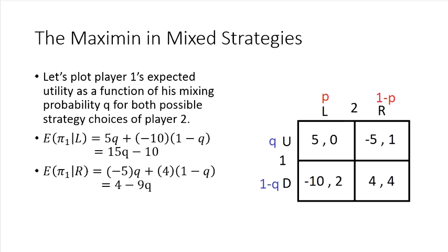Likewise, his expected payoff when player two is playing R is going to be 4 minus 9Q because player one is getting negative 5 with probability Q and you're getting 4 with probability 1 minus Q.